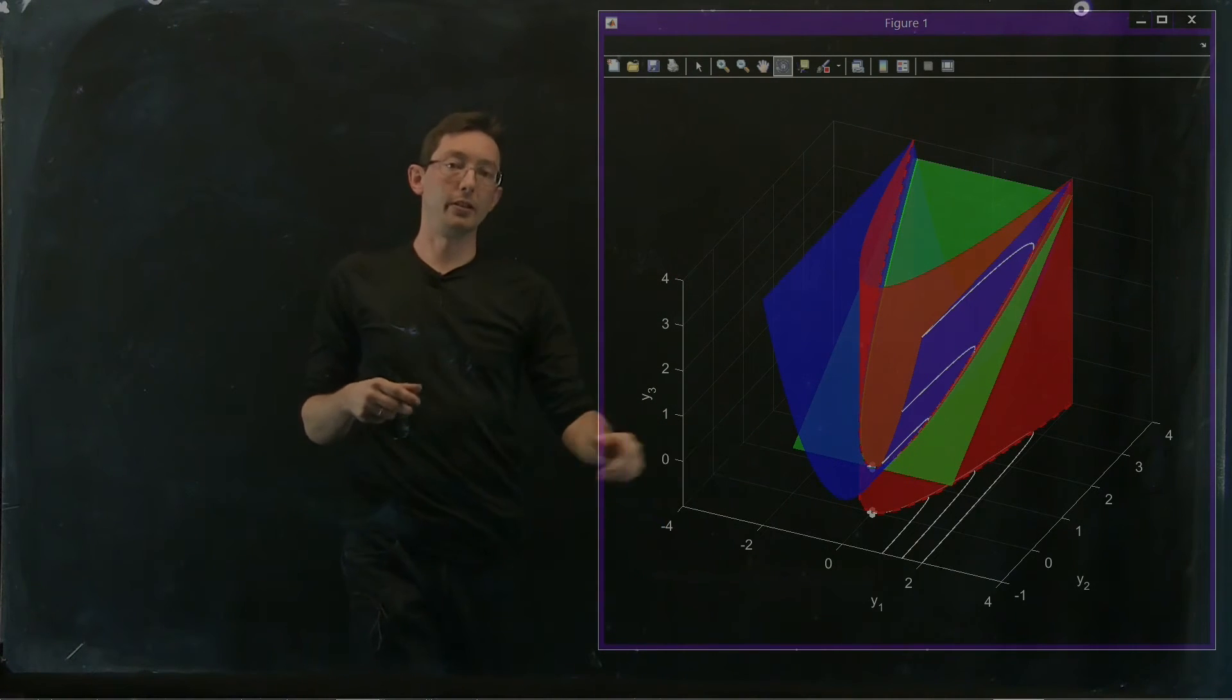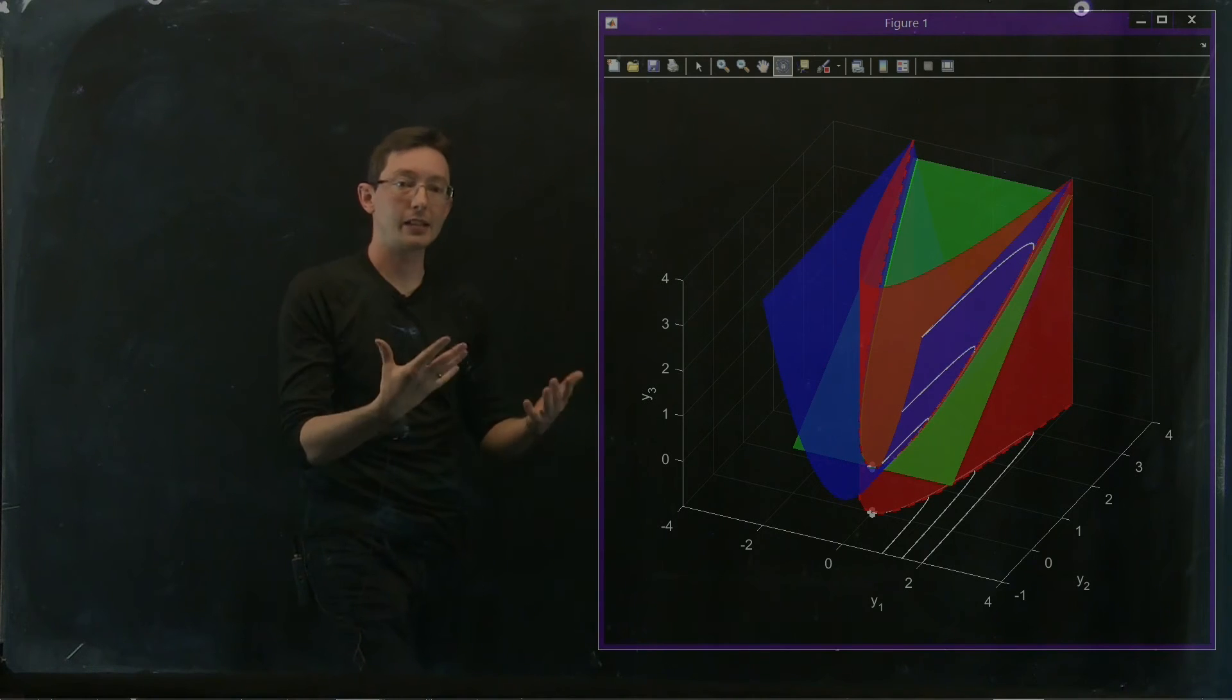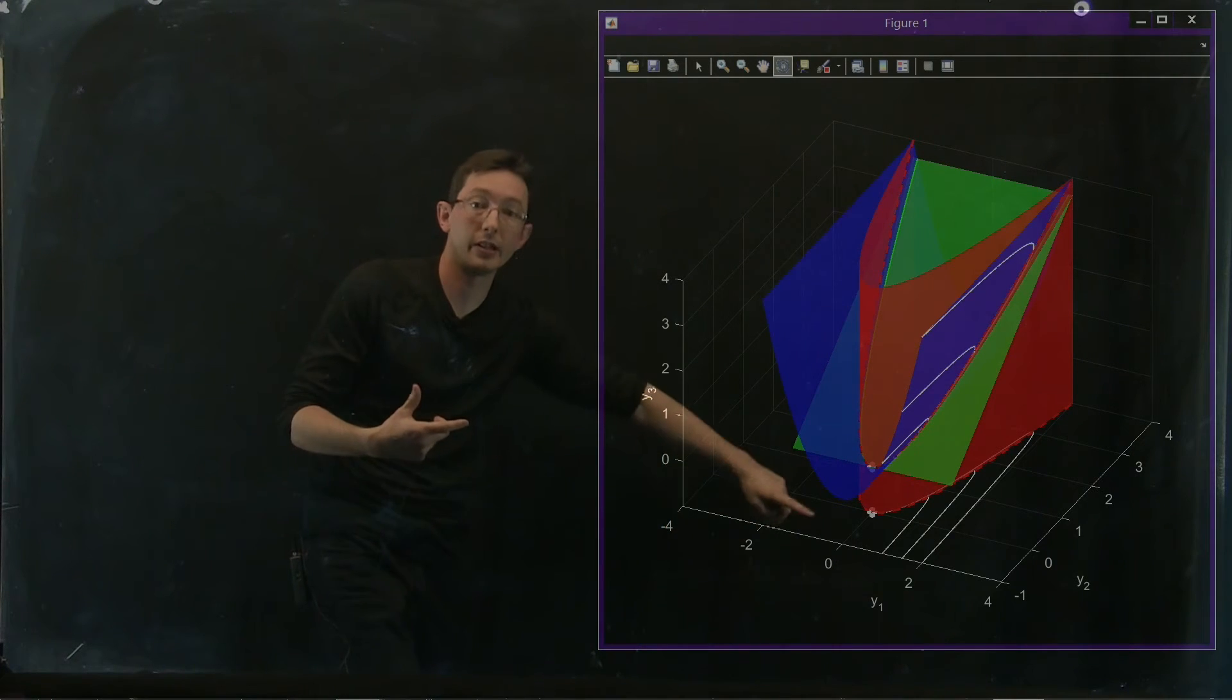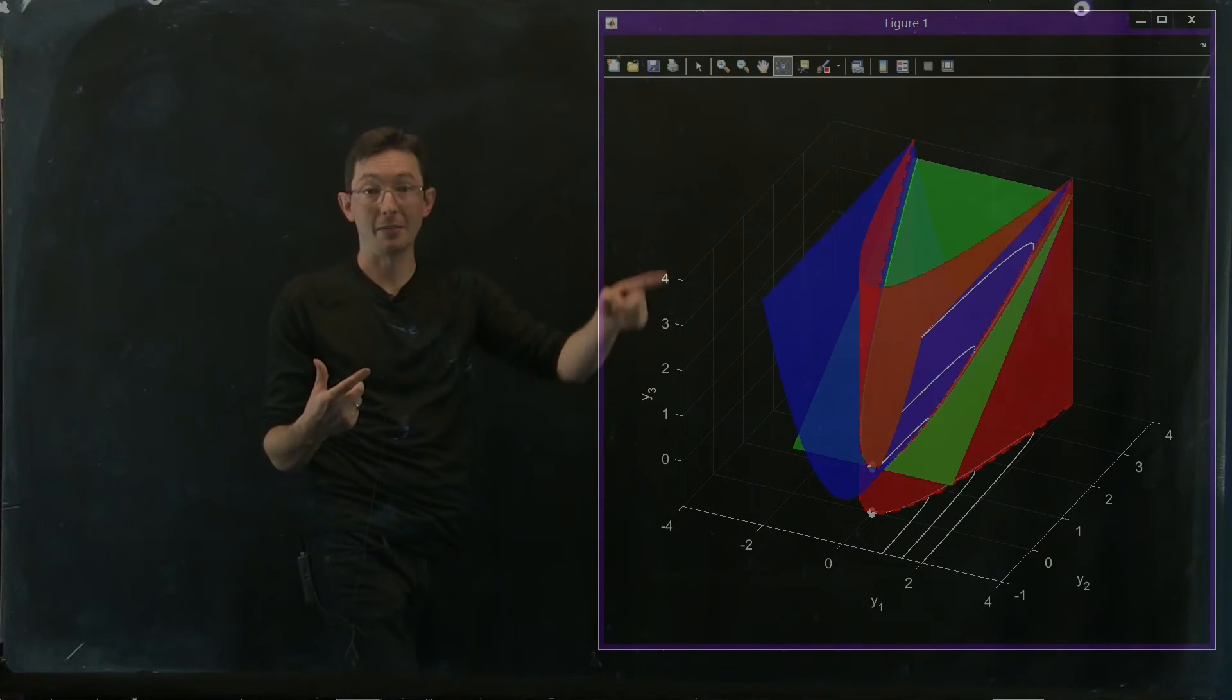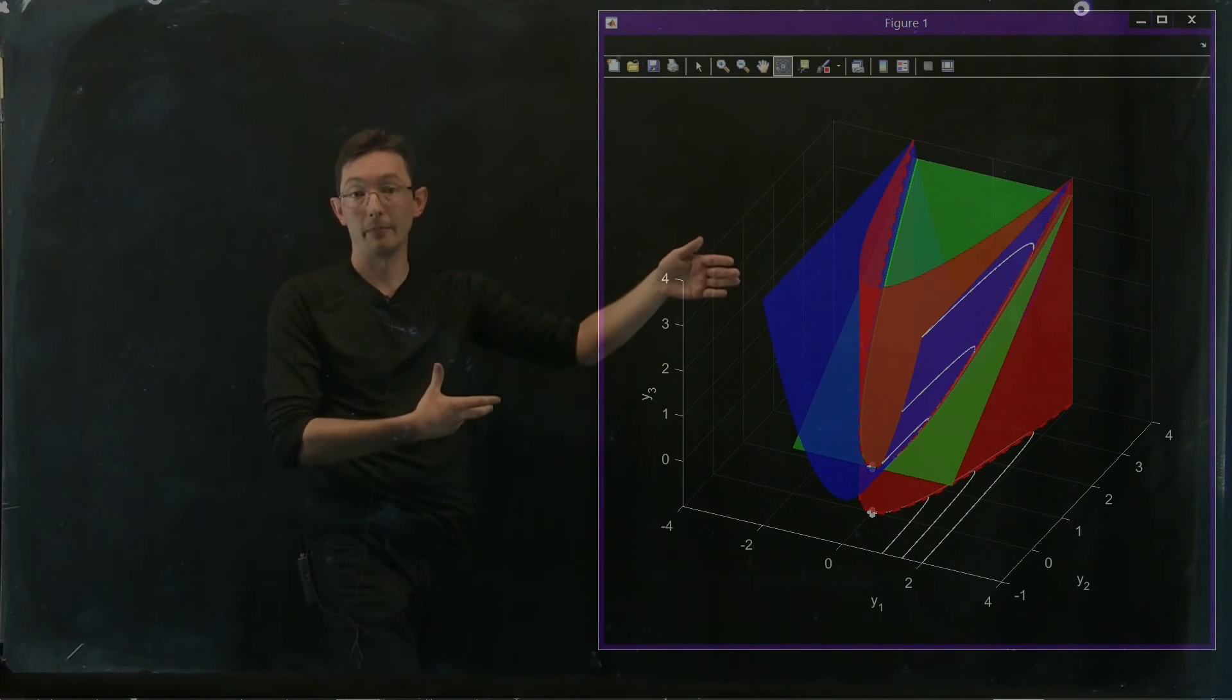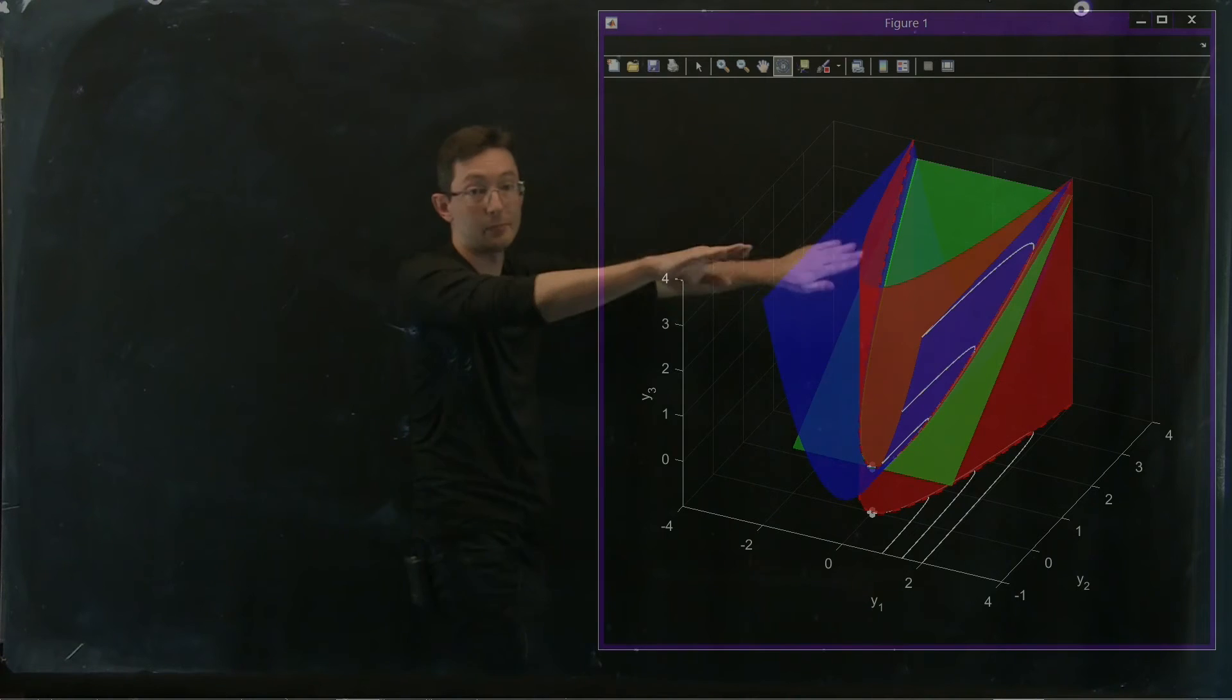And this blue parabolic sheet is the set of initial conditions that satisfy the fact that if I have an initial condition at x1, my initial condition for y3 had better be x1 squared. So this blue sheet is essentially, initial conditions should start out on this blue sheet.